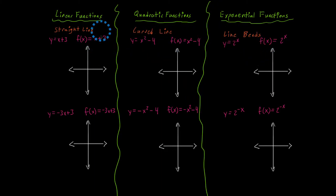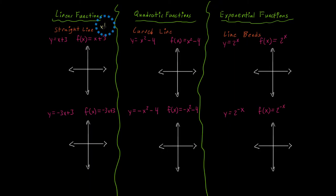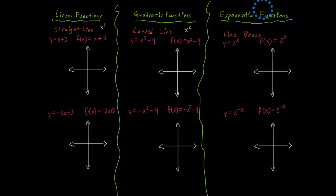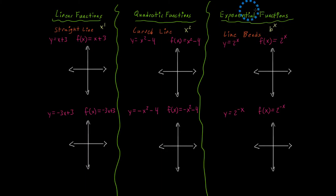Now let's actually graph these functions and look at some other characteristics. Before graphing, just pay attention to x in these functions. In the first linear function, x is raised to the first power — degree 1. In a quadratic function, x is raised to the second power, the power of 2. And in an exponential function, x is actually in the exponent — we write b to the x power, where b represents your base value and x represents the exponent, indicating you have an exponential function.